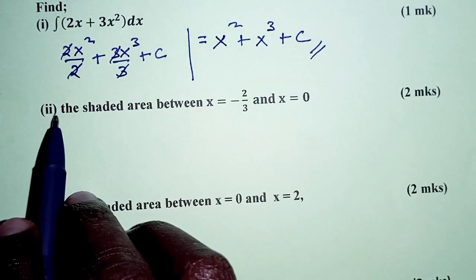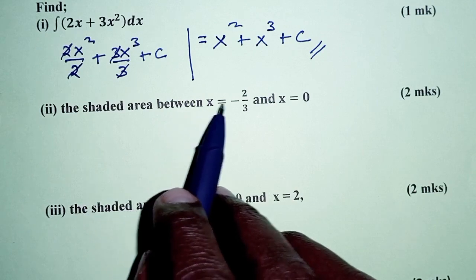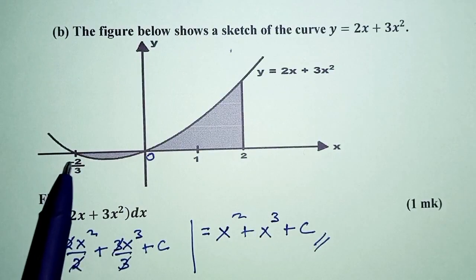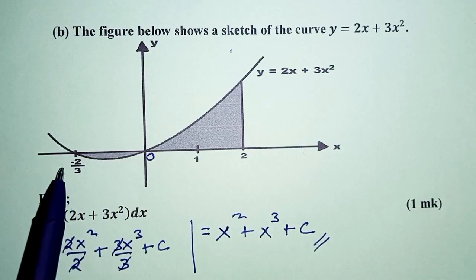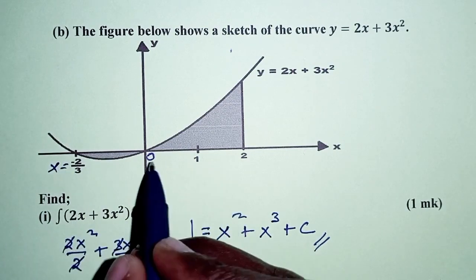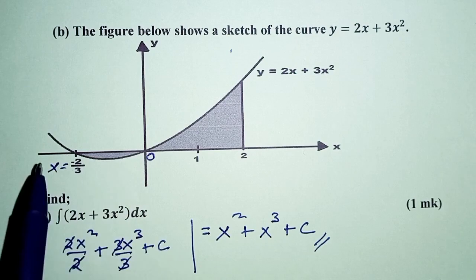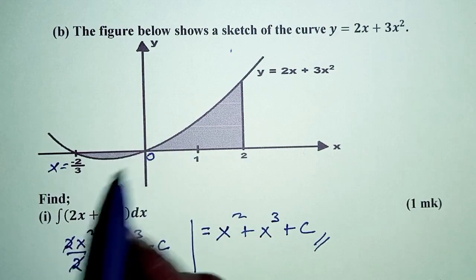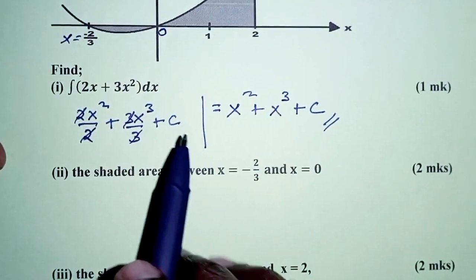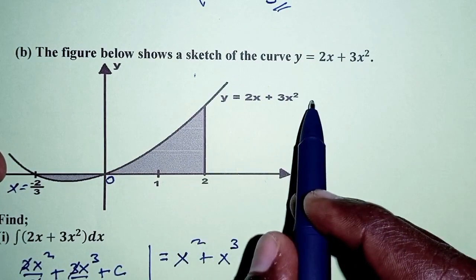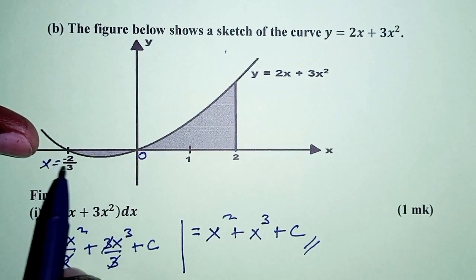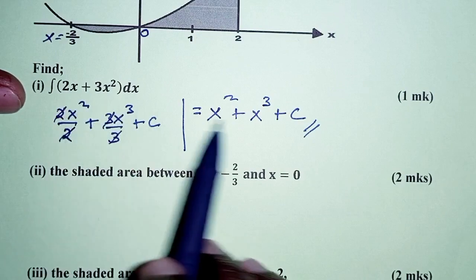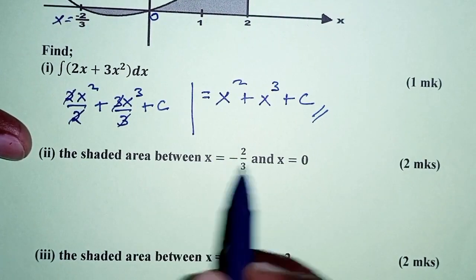For Roman 2, we find the shaded area between x equals negative 2 over 3 and x equals 0. This is the region bounded by the curve and the x-axis. We integrate the curve's equation within those limits — from x equals negative 2 over 3 to x equals 0 — using the expression x squared plus x cubed.